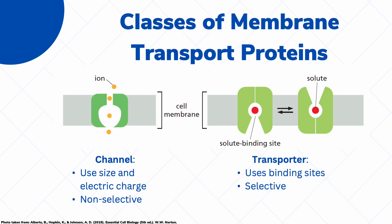Now let's talk about the different classes of passive transport proteins: channels and transporters. Channels are proteins that essentially have a hole or a passageway in the middle through which different solutes can pass. However, solutes must follow two criteria: they have to be physically small enough to fit through the gap, and they must have the proper electrical charge. For example, if the protein has a negatively charged channel, then only positively charged molecules can pass through. We should also note that the channel is non-selective — as long as the molecule fits both criteria, it will be able to pass through.